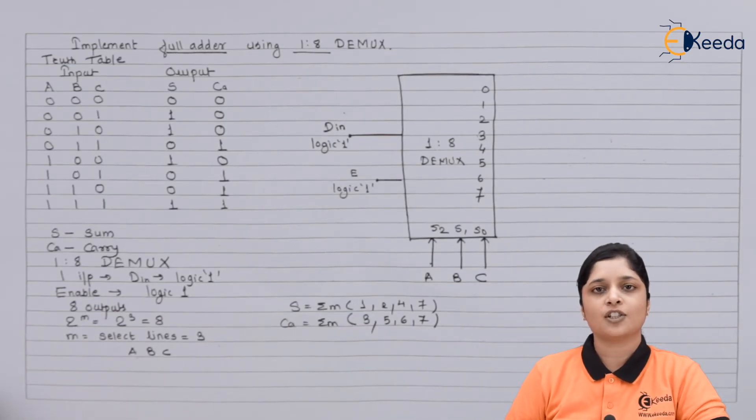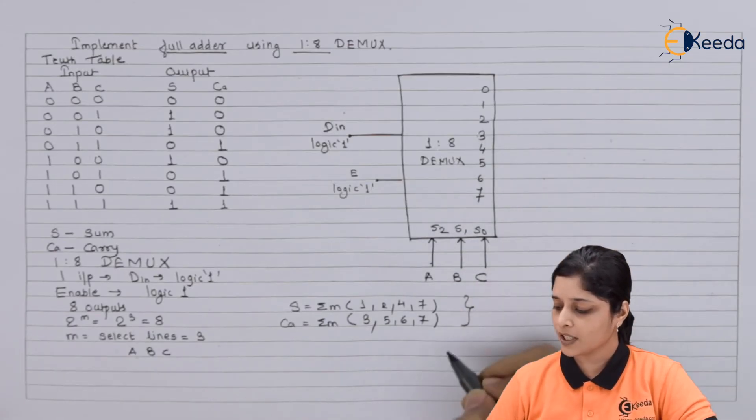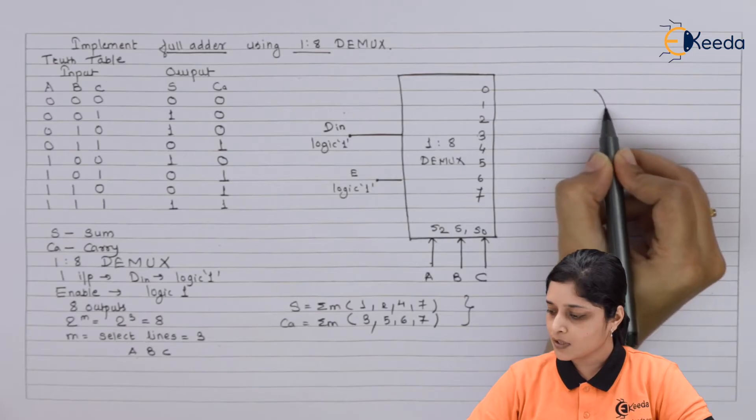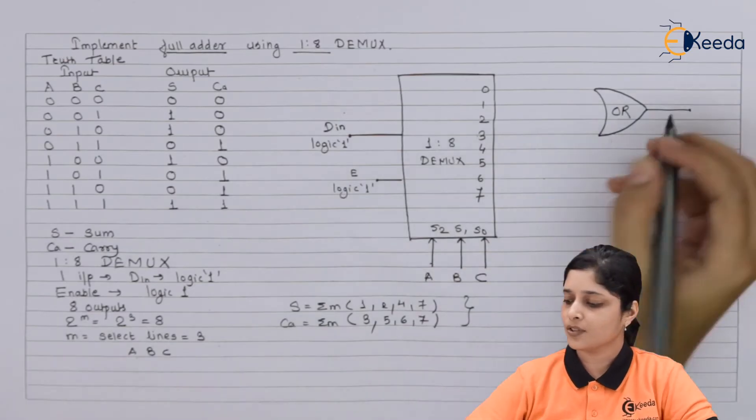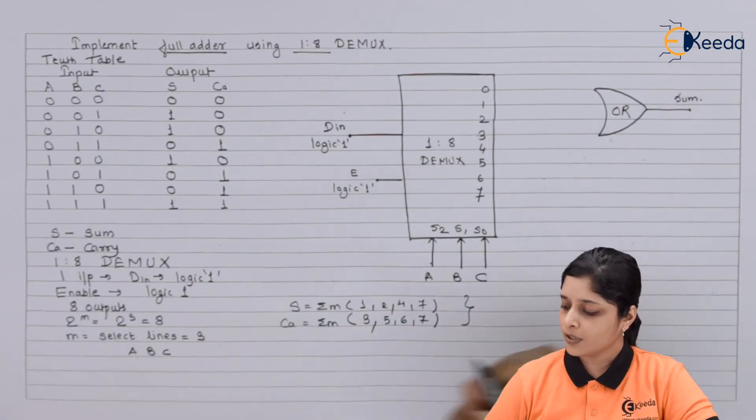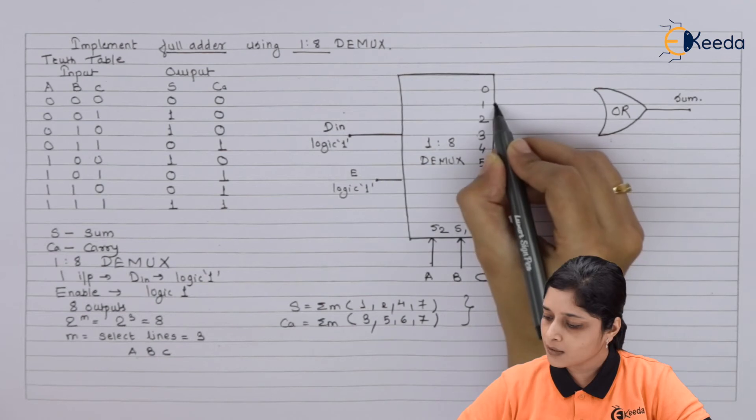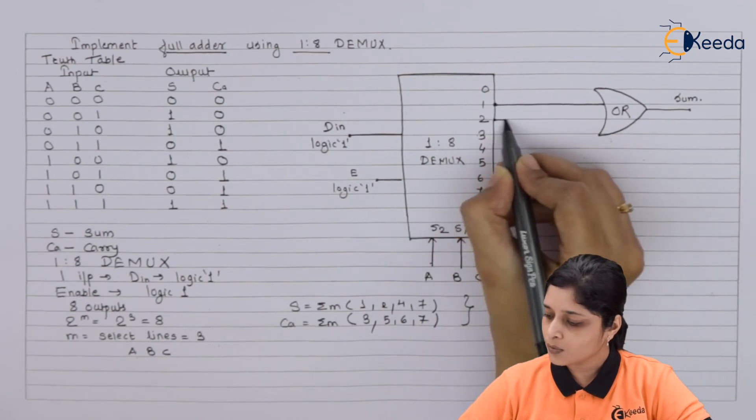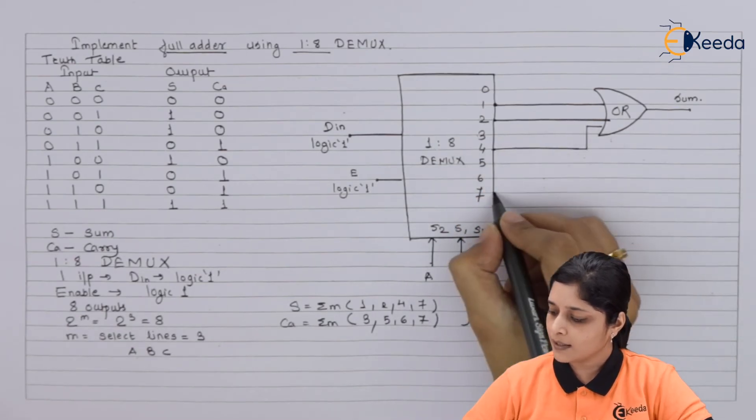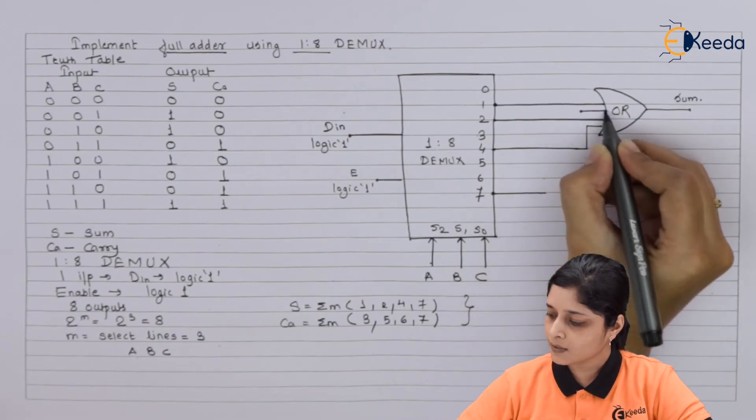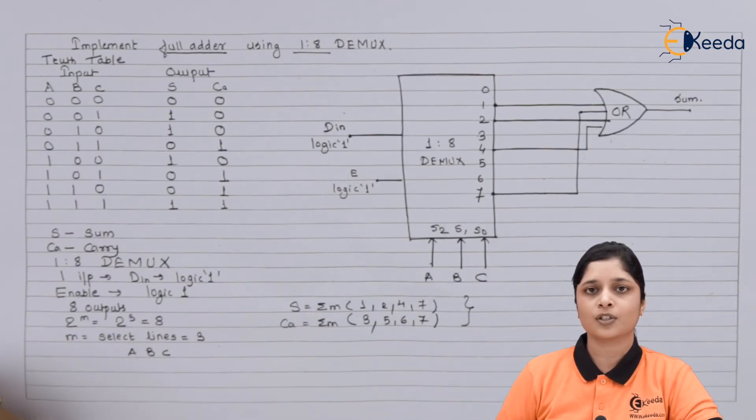Now for the realization purpose we have now the expressions. So we will draw the separate OR gate for sum and carry. So for sum you have one OR gate. You have to focus on the terms present for sum expression 1, 2, 4 and 7. So we will take here 1, 2, then 4 and lastly we have to take here 7. So in this way you have to design the OR function for sum.